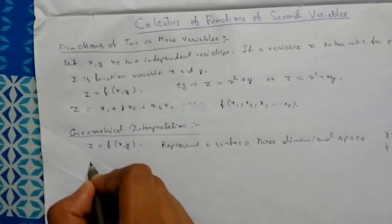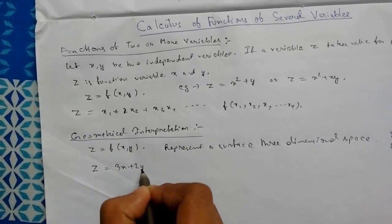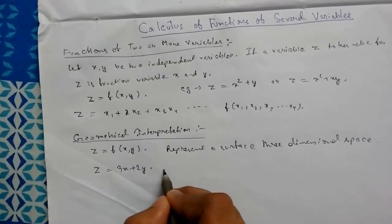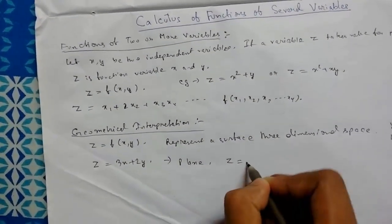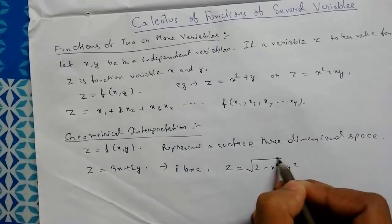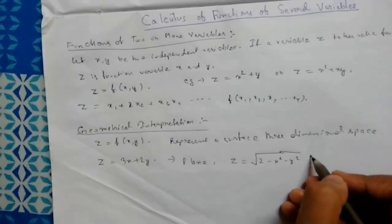So let me show you. Suppose we have z equals 3x plus 2y. So we see that this represents a plane. Or z equals 2 minus x square minus y square, anything like that, represents a surface in three dimensional space.